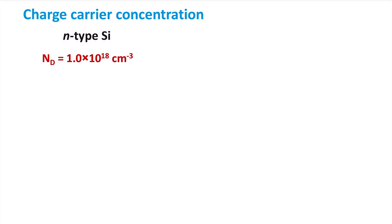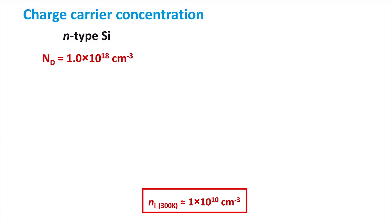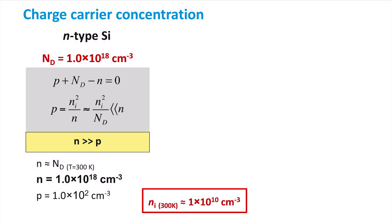Let's work out how to calculate the charge carrier concentration from a given doped concentration. We will use an example of an N-type silicon at room temperature that has a donor concentration of 1×10¹⁸ phosphorous atoms per cubic centimeter. Since we are at room temperature, we can assume that all the dopants are ionized. The intrinsic carrier concentration of undoped silicon at room temperature is 1×10¹⁰ carriers per cubic centimeter. It is clear that the dopant concentration is orders of magnitude higher than the intrinsic carrier concentration; therefore, the intrinsic concentration essentially has no effect on the electron concentration.